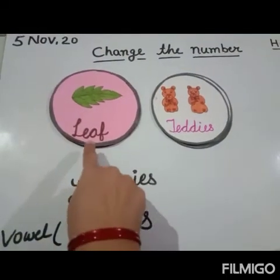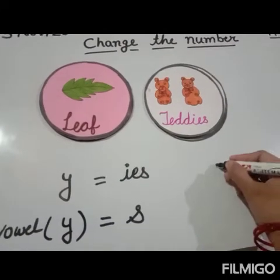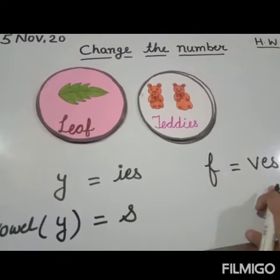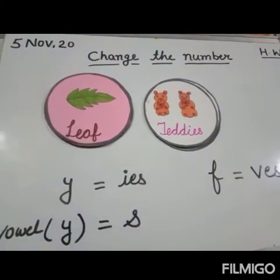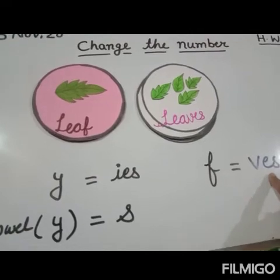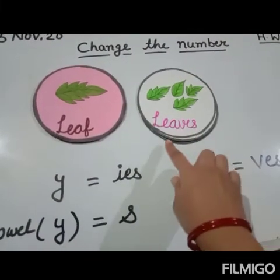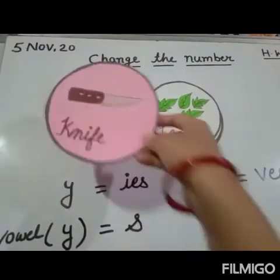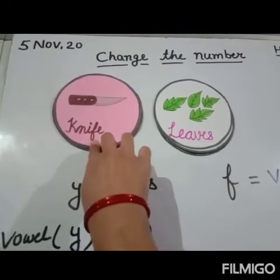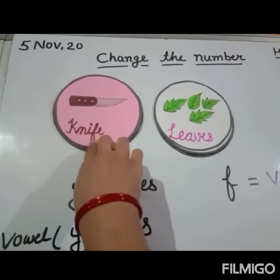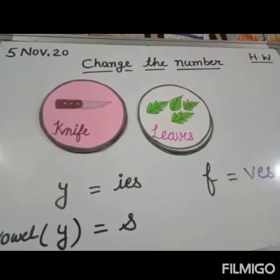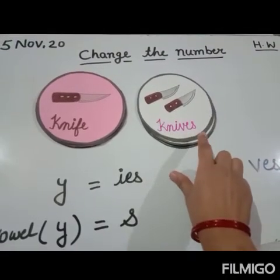Now next we are doing another form. Leaf — whenever the last sound is F, we remove F and add V-E-S. So leaf changes to — the F sound came, so we remove F and add V-E-S — Leaves: L-E-A-V-E-S. Similarly, knife becomes Knives — K-N-I-V-E-S.